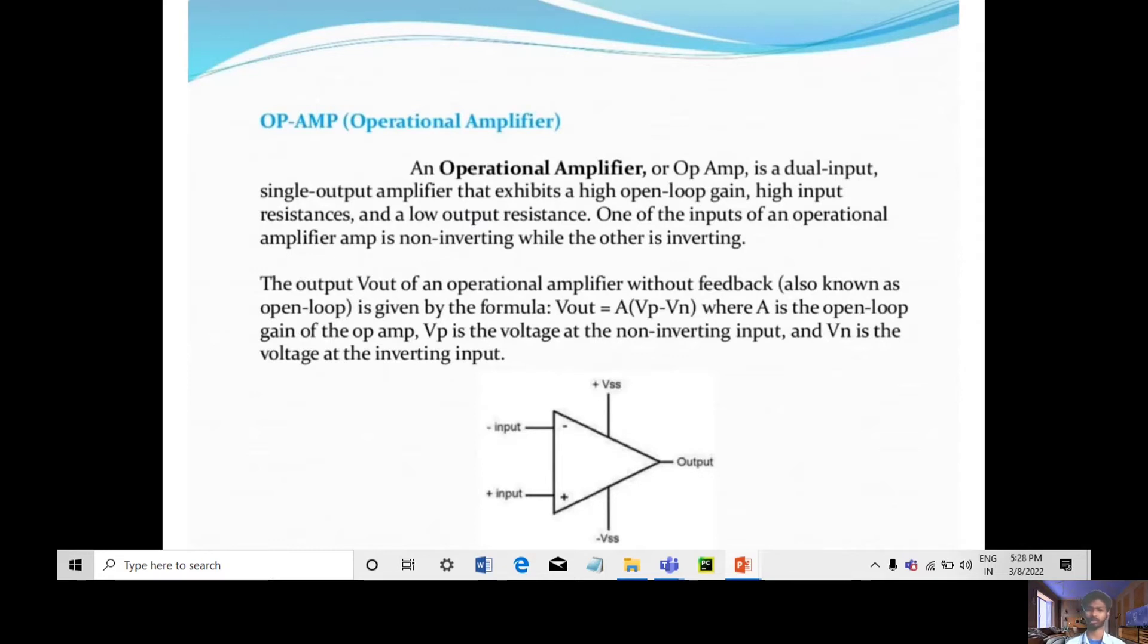The output of an operational amplifier without feedback, also known as open loop, is given by the formula Vout = A(Vp - Vn), where A is the open loop gain, Vp is the voltage at the non-inverting input, and Vn is the voltage at the inverting input.